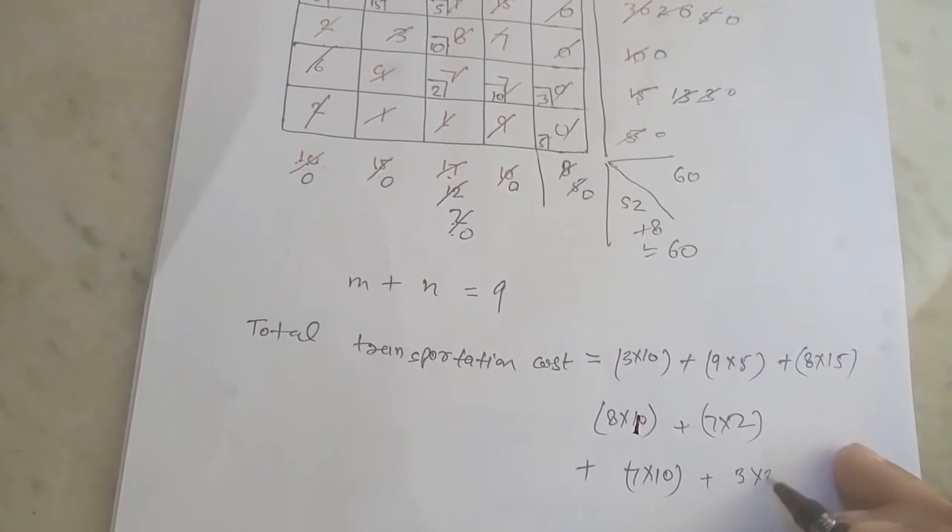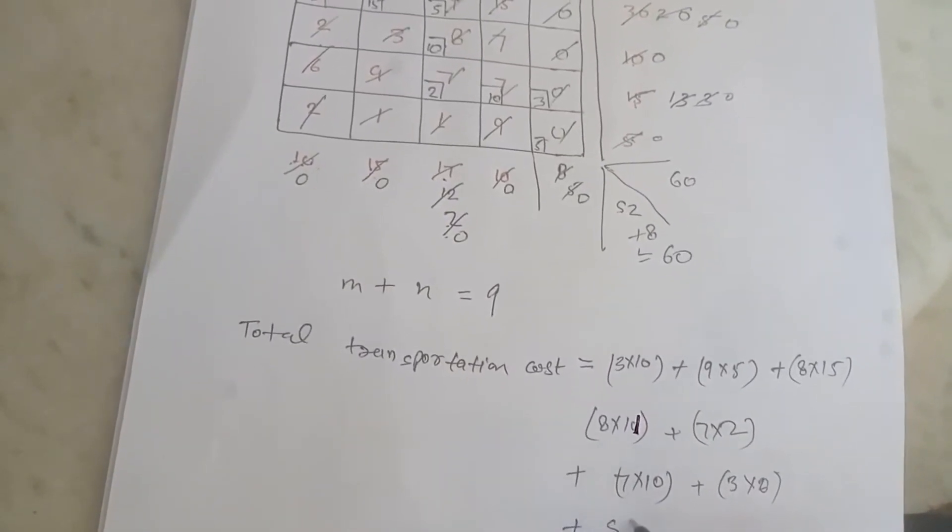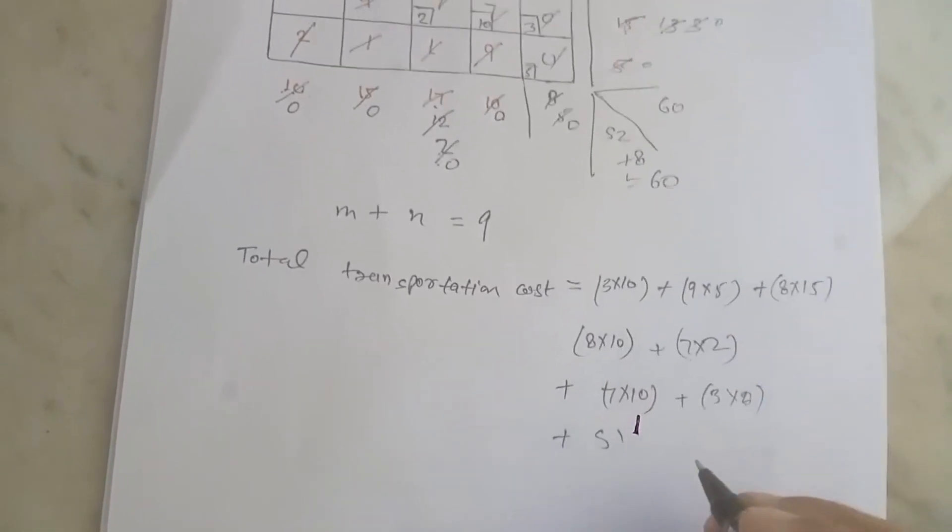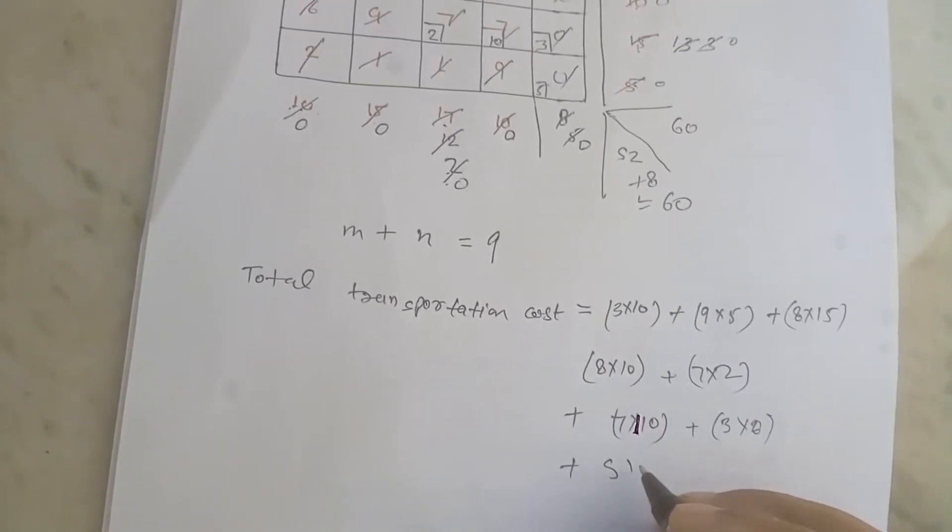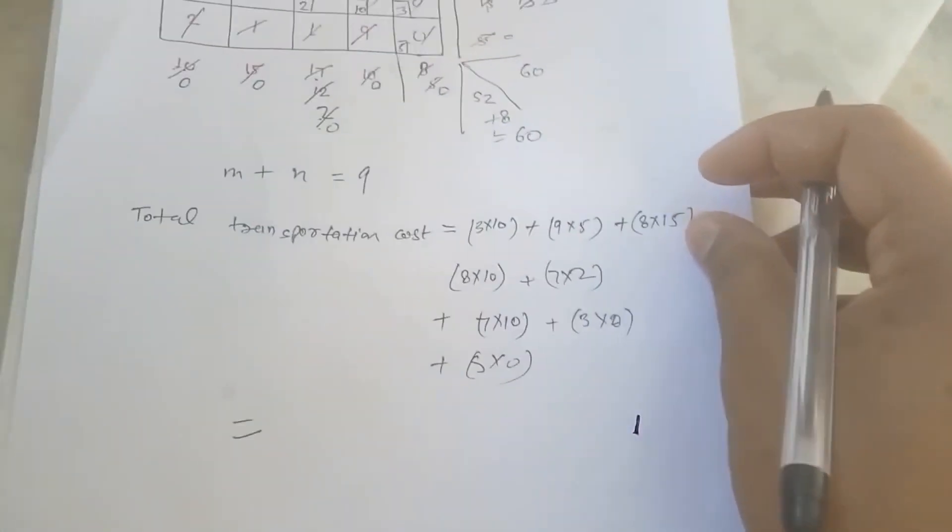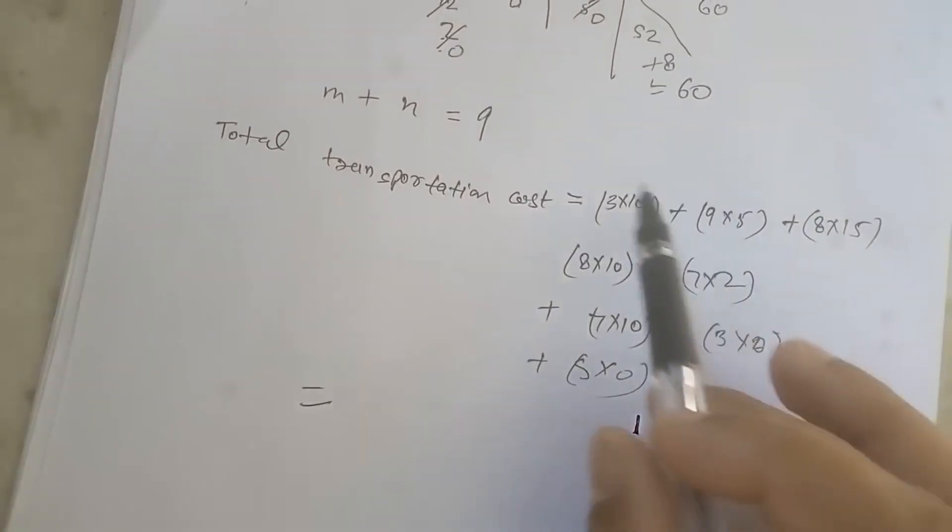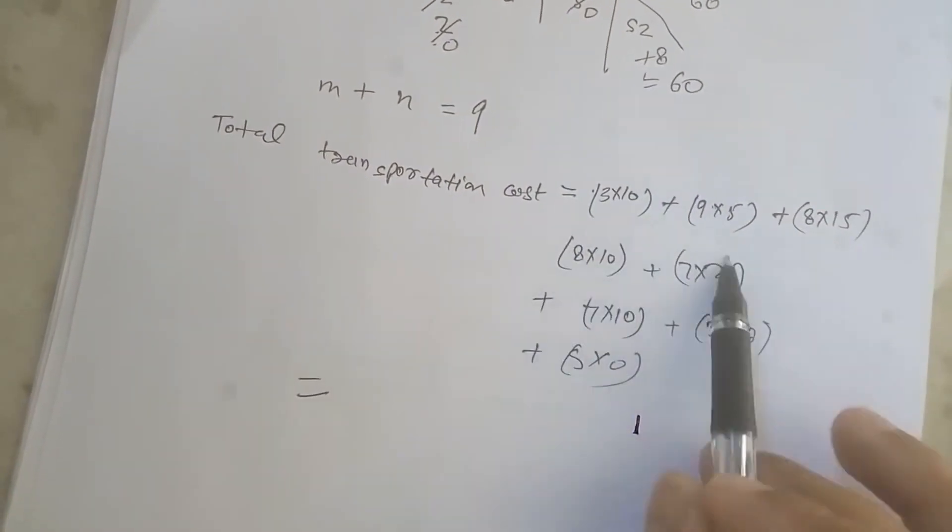Plus 3 into 0 plus 0 into 7, or 5 into 0.